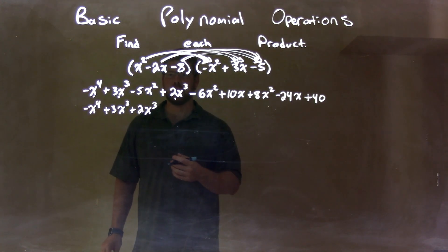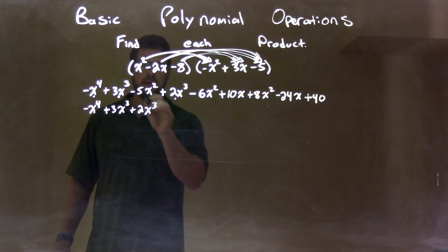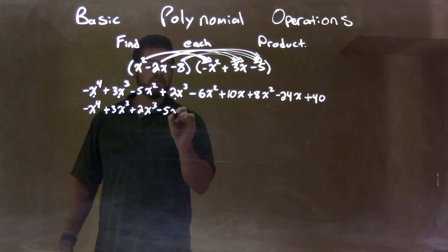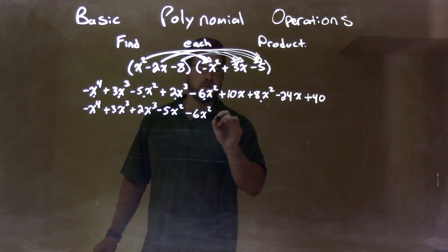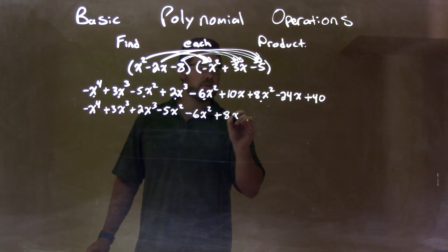Nothing else to the third power. Now, we bring down the second power or the square. Minus 5x squared right here. Minus 6x squared. Bring that one down. And, plus 8x squared.